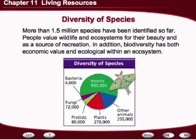More than 1.5 million species of organisms have been identified so far on this planet. People value wildlife and ecosystems for their beauty and as a source of recreation. In addition, biodiversity has both economic and ecological value within an ecosystem. By looking at the graphic, insects have the highest number of species on the planet at 950,000. Bacteria have 4,000 identified species, fungi has 72,000, protists or single-celled organisms have approximately 80,000 species, plants have 270,000, and all other animals have 255,000 species identified.